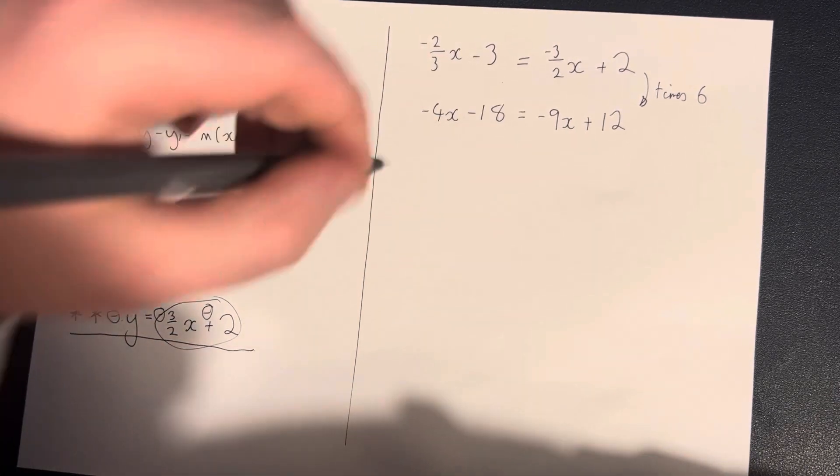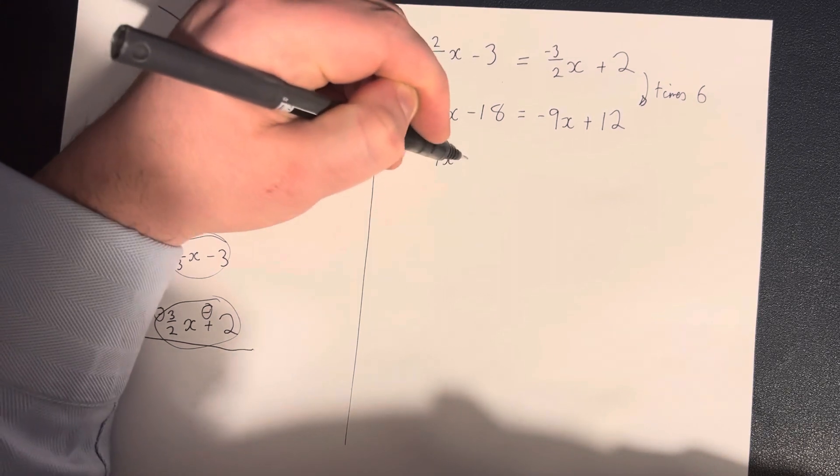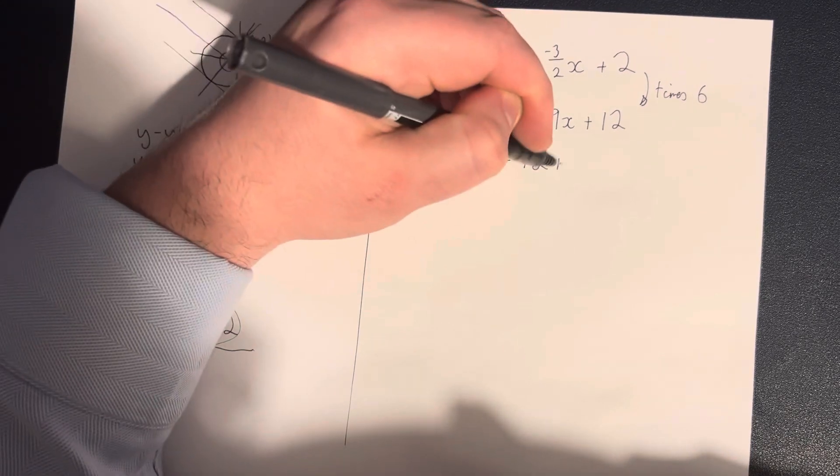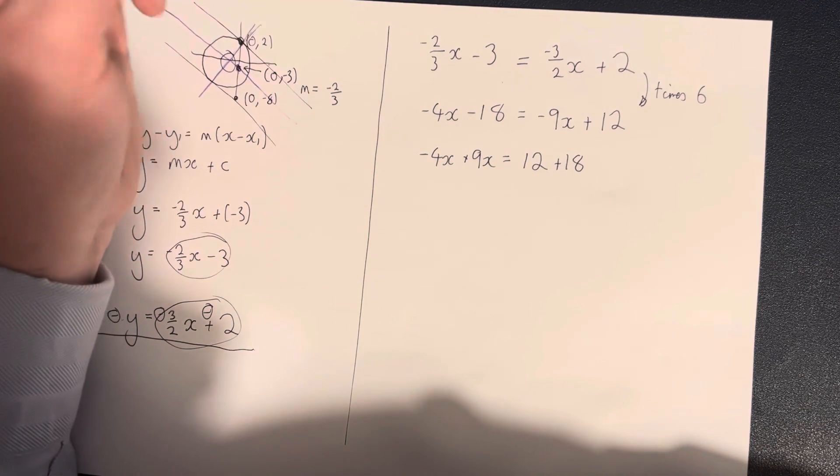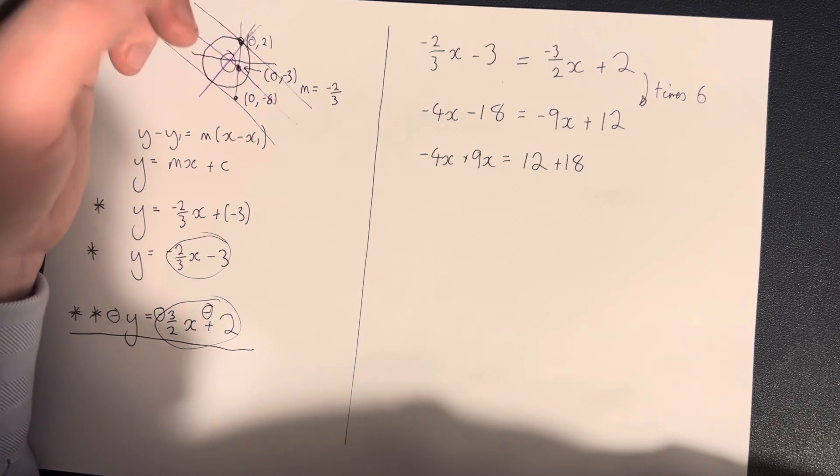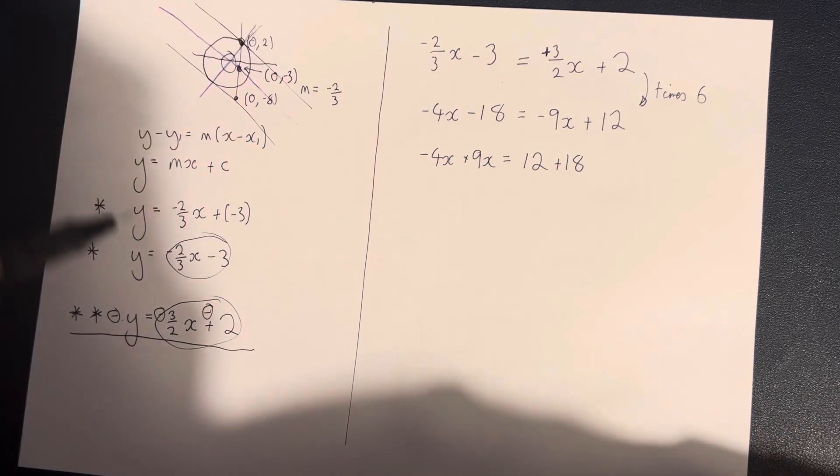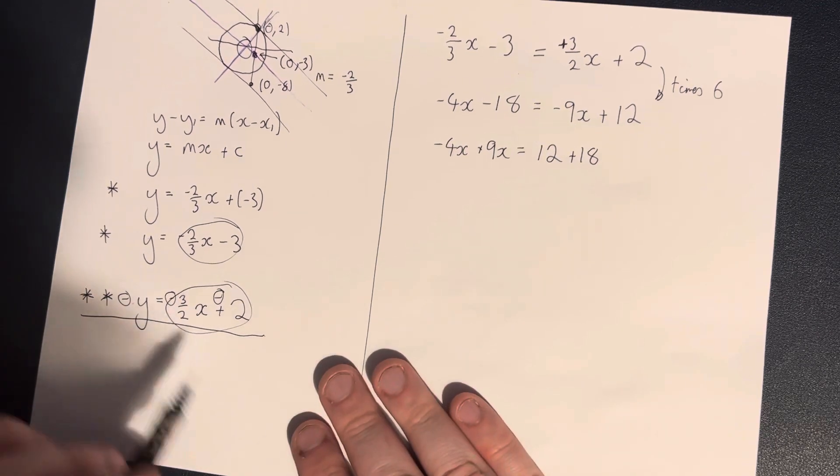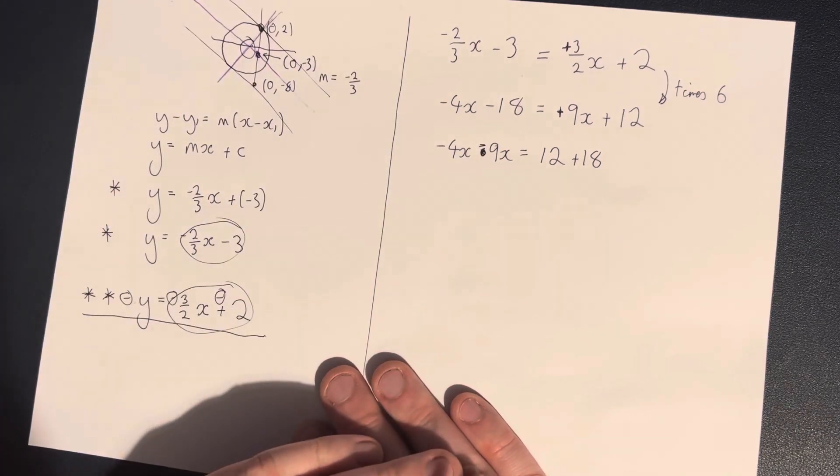So now we're dealing with whole numbers, much easier to deal with. We can now go with minus 4x plus 9x is equal to 12 plus 18. So we have, oh, have I gone wrong here? Oh, sorry, that's a plus there. I was reading this minus, but that's not actually a minus. I just put that in for this sort of purposes earlier. So therefore, that's a plus. And therefore, that is a negative.